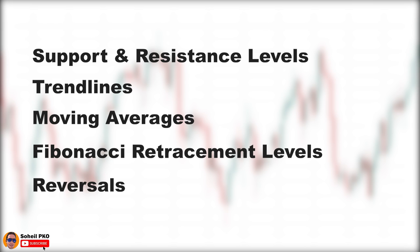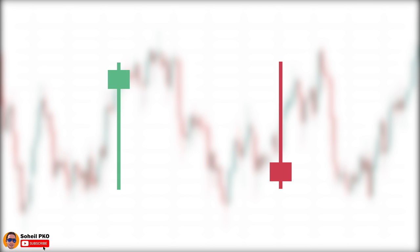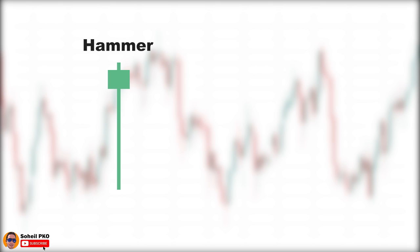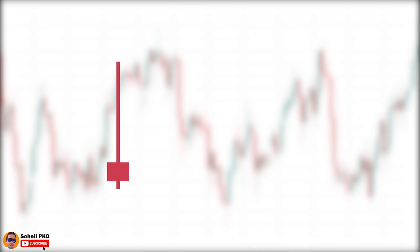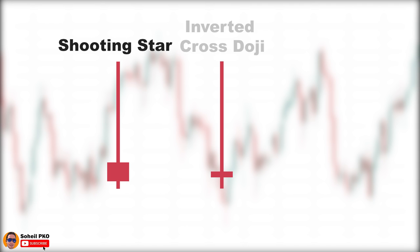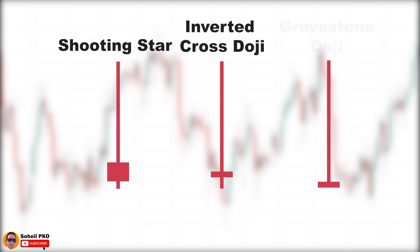I'll explain them with examples later in this video. We can have different kinds of rejection candles with their specific names and unique specifications. The bullish rejection candle with a long lower shadow that has meaning only when forming at the bottom is called a hammer. If the body is a doji with a small upper shadow, it's called a cross doji, and if there is no upper shadow it's called a dragonfly doji. The bearish rejection candle with a long upper shadow that has meaning only when forming at the top is called a shooting star. If the body is a doji with a small lower shadow it's called an inverted cross doji, and if there is no lower shadow it's called a gravestone doji.